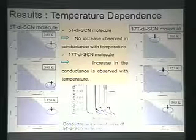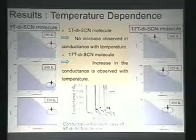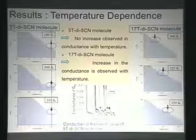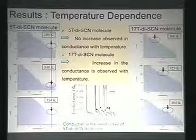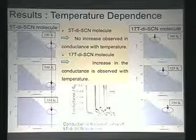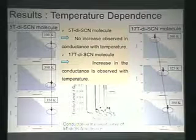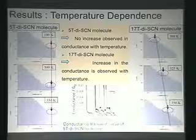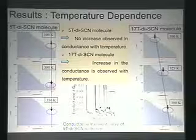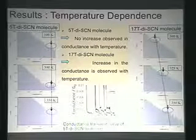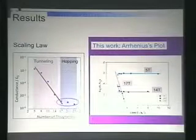This is some of the results which I have chosen to explain. For the shortest molecule, the 5T molecule, it demonstrates for three different temperatures which I am showing here: 100K, 300K, 350K. You can see that the conductance value remains similar, which indicates that it shows no dependence with temperature at all. And I can say that the dominant mechanism here is tunneling. For 17T, you can see at 100K, 300K, 350K, all the conductance value changes. Meaning that it shows dependence with temperature, which also indicates that the dominant transport mechanism is not tunneling. Instead, it is hopping.